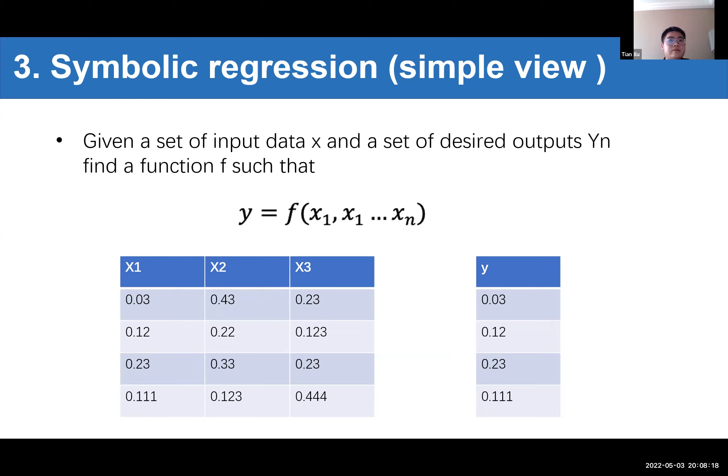And like here, this is a simple example for the symbolic regression. The terminal set of symbolic regression is composed of operators like plus, minus, times, sine, cosine, log, and also some random numbers and variables, x0, x1, x2, onto xn. Finally, we will get the function y equal to function f of x1, x2, onto xn.